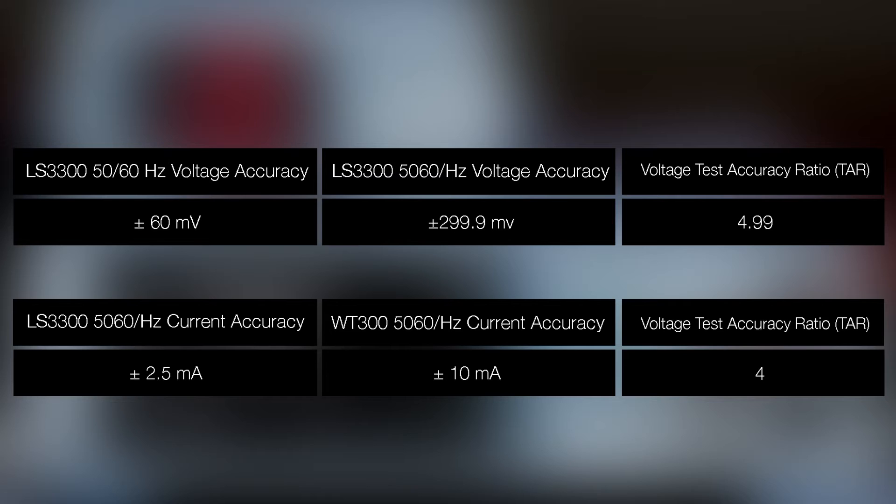As well for the LS3300 at 60 Hertz, the current accuracy at this range and setting is plus minus 2.5 milliamps with the WT300 accuracy being plus minus 10 milliamps. This provides a TAR for voltage equaling 4, passing the minimum required ratio.